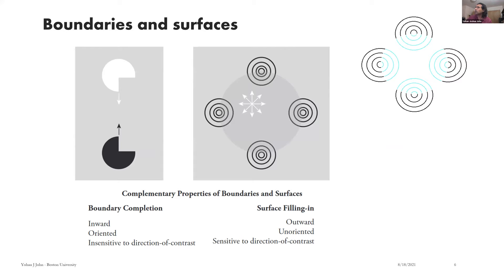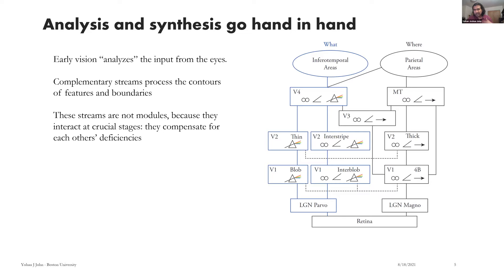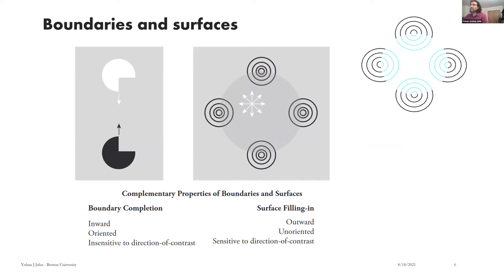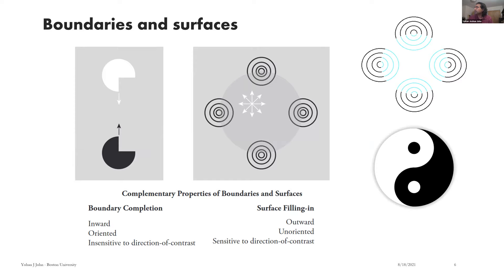That's a complementary stream — this complementarity is a theme that comes up again and again. We saw one version of this in the differences between boundary completion and surface filling-in. They sound similar but have differences: boundaries send out feelers toward each other, whereas surfaces just carry on until something stops them. That's what explains neon color spreading and illusory contours — this yin-yang of processing.